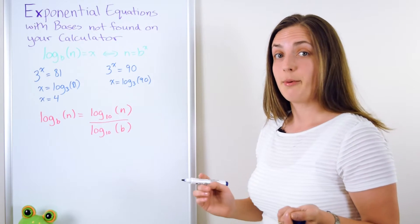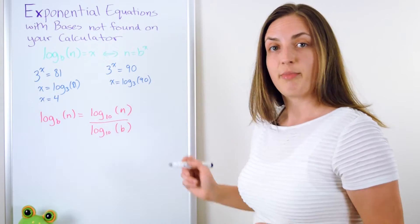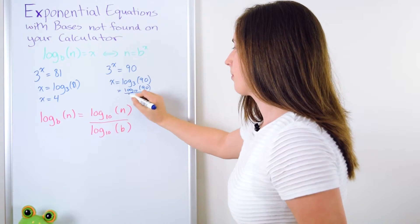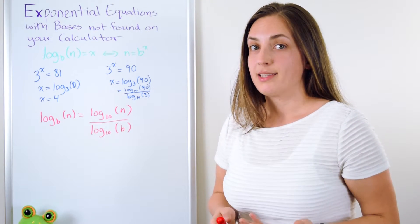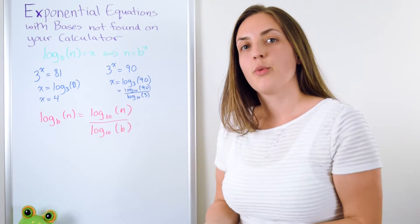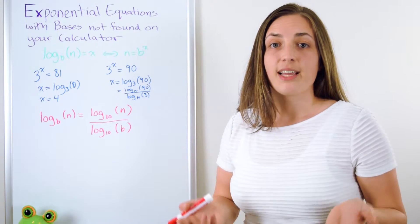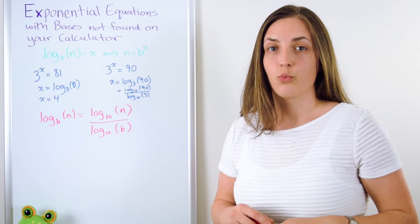So let's take a look at our example. Log base 3 of 90 we now can write in terms of base 10. Remember that when you're changing bases it doesn't matter what base you go into. I just chose to go into base 10. But often we would like to go into base e because the natural logarithm is really useful to work with.